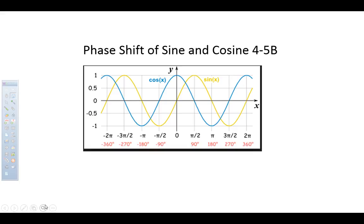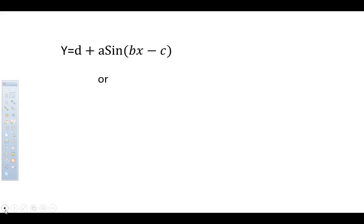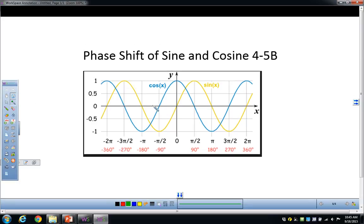This lesson is on the phase shift of sine and cosine. Sine and cosine are just phase shifts of each other. A phase shift is when you take cosine and slide it forward — if I took my cosine graph and slid it forward, I would get my sine graph. And if I took my sine graph and moved it backwards, I would get my cosine graph.